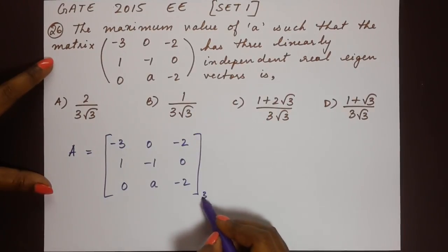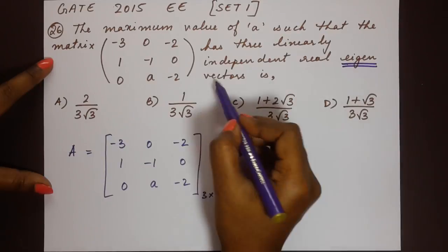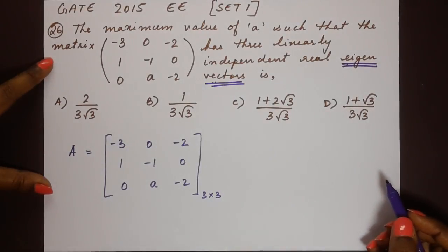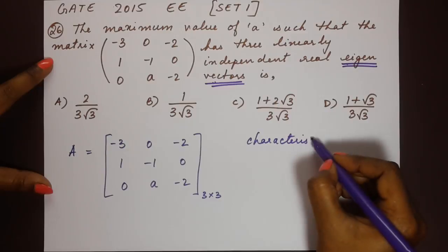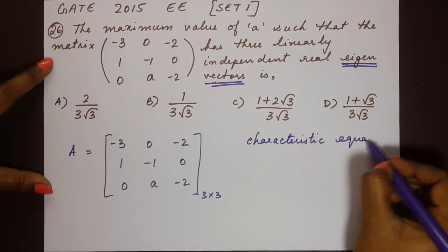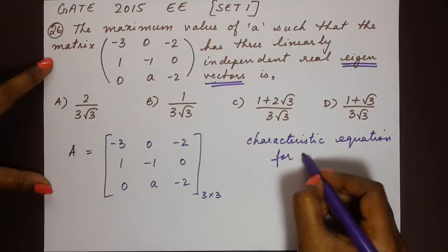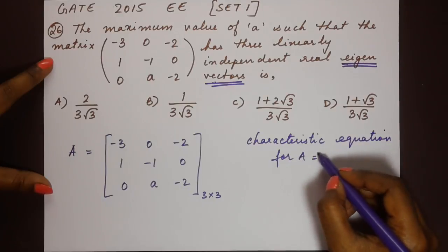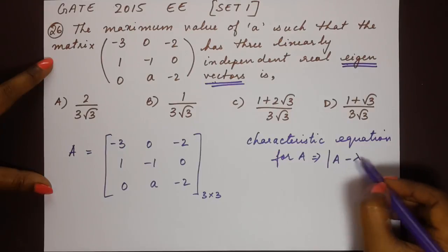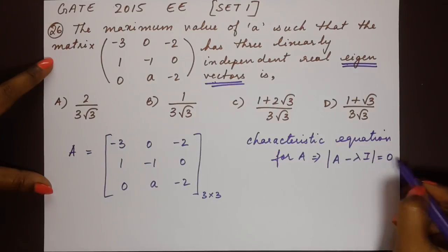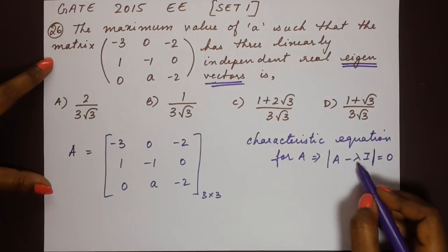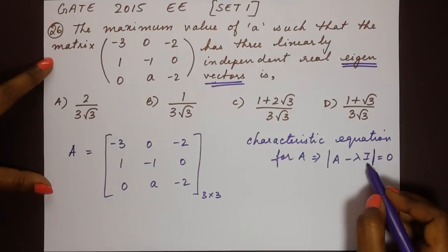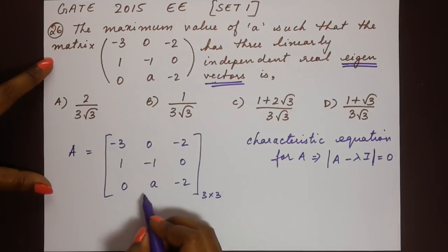Since this is a three by three matrix and they have mentioned eigenvectors, the first thing we do is find the characteristic equation for A. This is determined by the determinant of A minus lambda I equals zero, where lambda corresponds to the eigenvalues and I is the identity matrix.